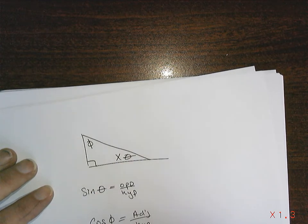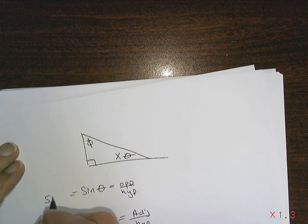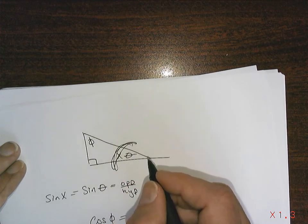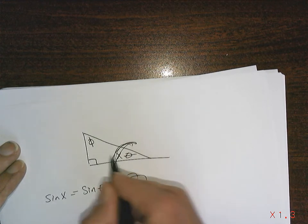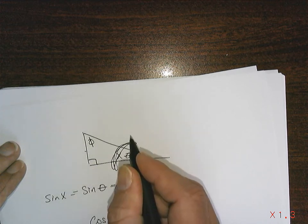And if I named it x, then it would be, this one could also be sine x. It doesn't matter what I name this angle. The ratio still stays the same for that angle: opposite, adjacent, hypotenuse.